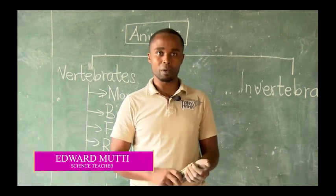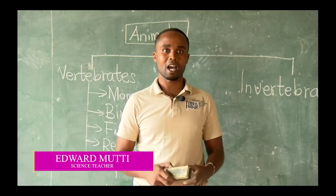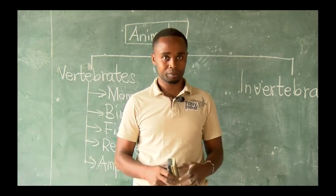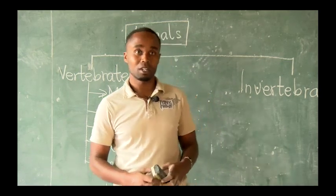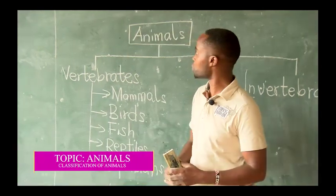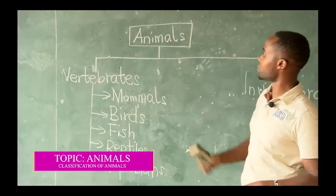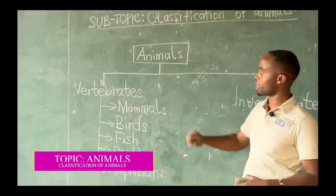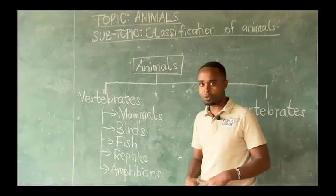Today I want us to group animals — animals that have similar characteristics. And to start off, animals are classified into two, as you can see here on the board. So animals are divided or classified into two.